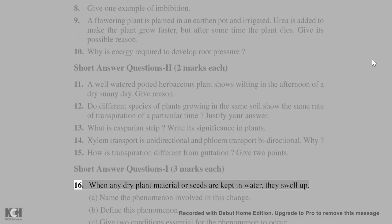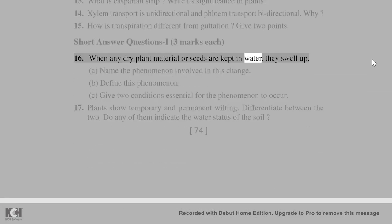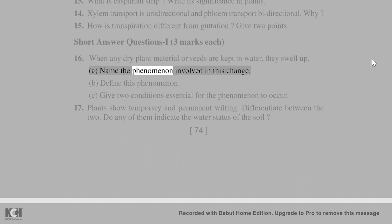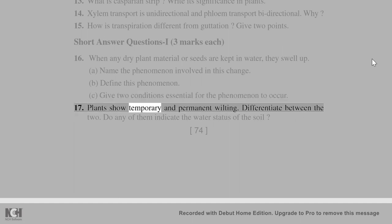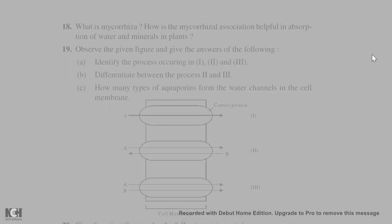Short answer questions, 3 marks each. 16. When any dry plant material or seeds are kept in water, they swell up. A. Name the phenomenon involved in this change. B. Define this phenomenon. C. Give two conditions essential for the phenomenon to occur. 17. Plants show temporary and permanent wilting. Differentiate between the two. Do any of them indicate the water status of the soil?